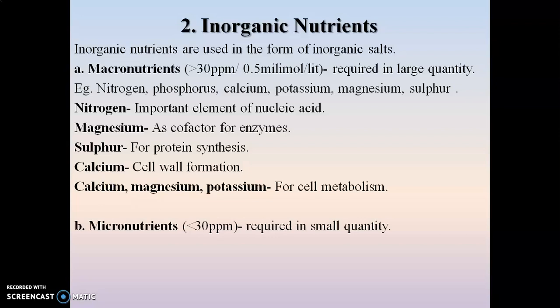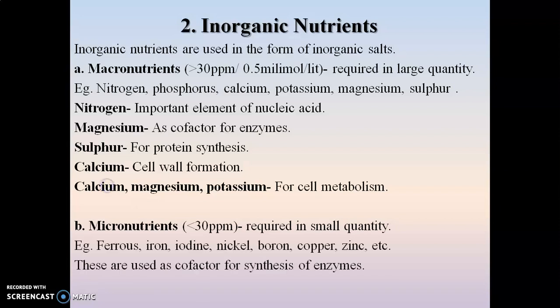Micronutrients are nutrients required in small quantities — less than 30 ppm. Examples include ferrous iron, iodine, nickel, boron, copper, and zinc. These are used as co-factors for the synthesis of different enzymes. This covers the inorganic nutrients, which include both macro and micronutrients.